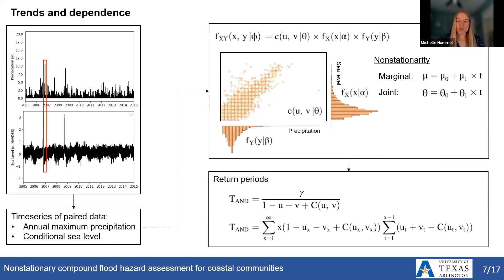For the cases where we incorporate non-stationarity, we allow the location parameter mu of the marginal distribution and the copula parameter theta of the joint distribution to vary with time, so that we can capture changes in the model structure over the period of analysis. Once we fit these marginal and joint distributions, we consider how trends and dependence influence the return periods. We define return periods as the average time between successive occurrences of events that equal or exceed some given threshold. In a bivariate setting, we use what is called the AND return period, which considers the likelihood that both sea level and precipitation will surpass a specific threshold at the same time. Under non-stationarity, we extend this through the application of a geometric distribution law, which allows us to account for time-varying processes.